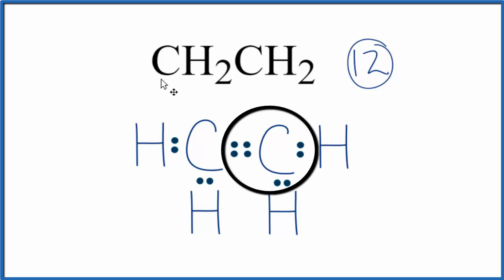This is the Lewis structure for CH2CH2. So by forming that double bond, we're sharing more, and that lets us have octets on both carbons.